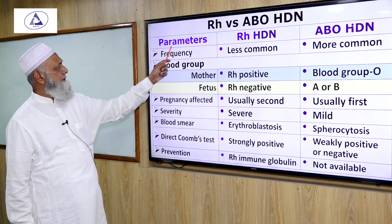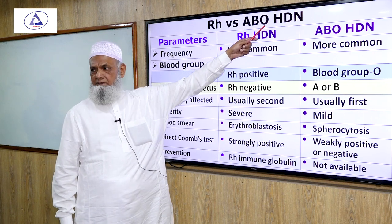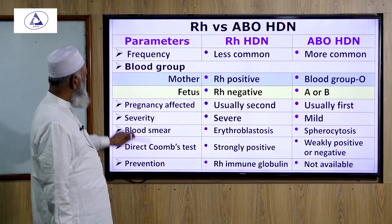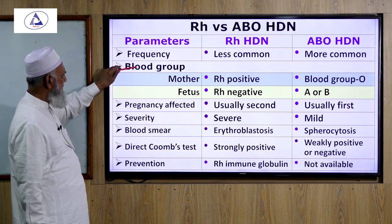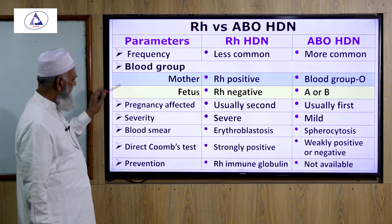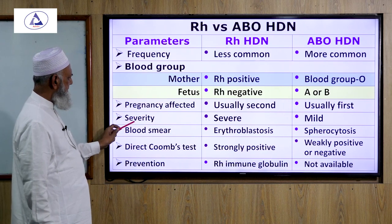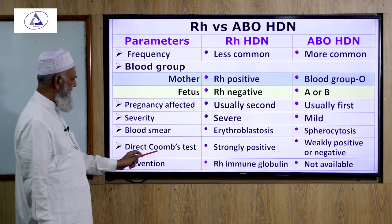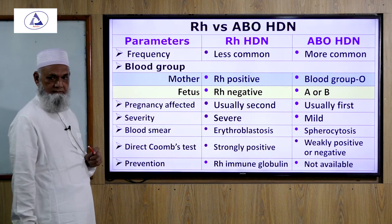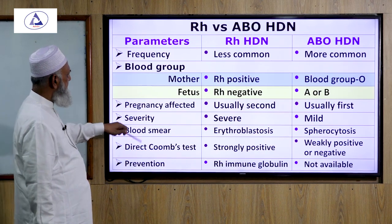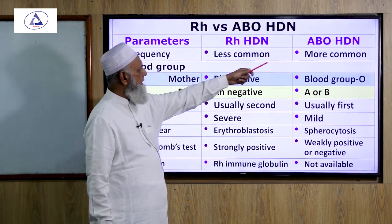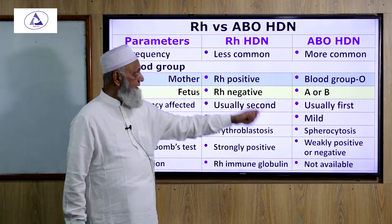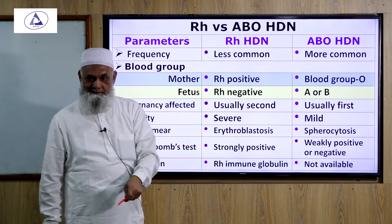Comparing Rh and ABO hemolytic disease of the newborn: ABO incompatibility is more common but less severe, while Rh incompatibility is less common but more severe. The parameters include frequency, blood group of mother and fetus, pregnancy affected, severity, blood smear, direct Coombs test, and prevention.